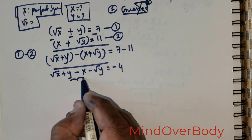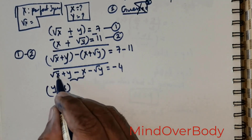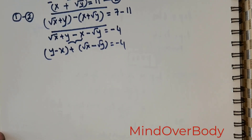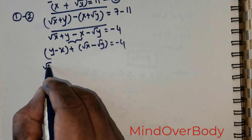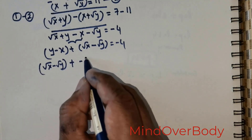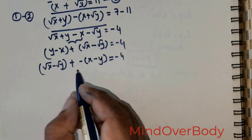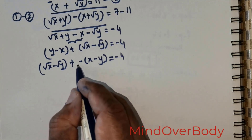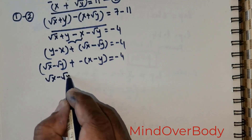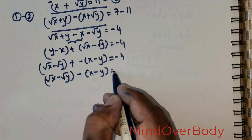7 minus 11 will give me negative 4. Now I'm going to club these two things together and write this as y minus x, and then club these two things together and write it as root of x minus root of y, is equal to negative 4. Now I'm going to take this term — root of x minus root of y — and take a negative sign out. So if I take a negative sign out, this is going to be negative(root of x minus root of y) and I have x minus y equal to negative 4.